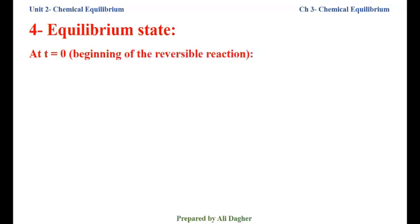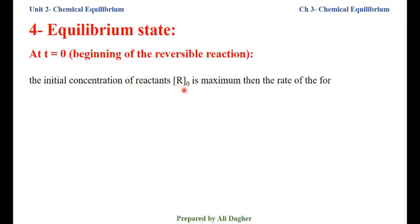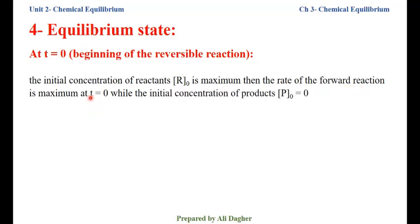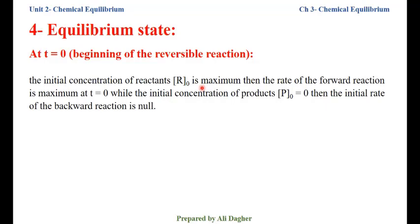At T equals 0, the beginning of the reversible reaction, the initial concentration of reactants is maximum. Then the rate of the forward reaction is maximum at T equals 0. As we have seen in kinetics, the rate of reaction depends on the concentration of reactants. When the concentration of reactants increases, the rate of reaction increases. At T equals 0, the concentration of reactants is maximum, so the rate of the forward reaction at the beginning is maximum.